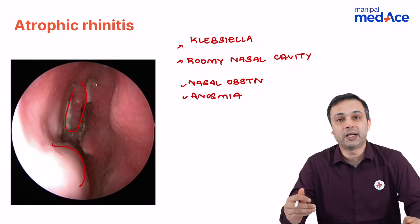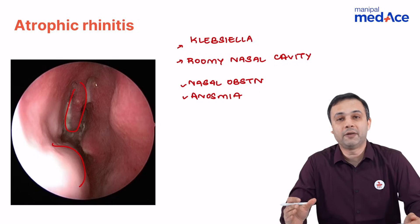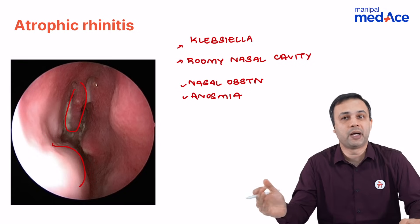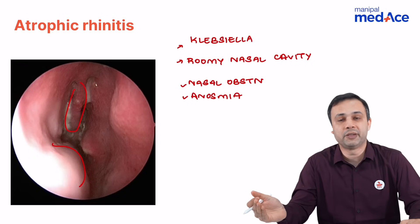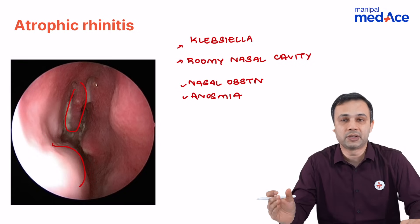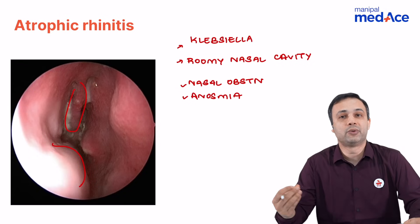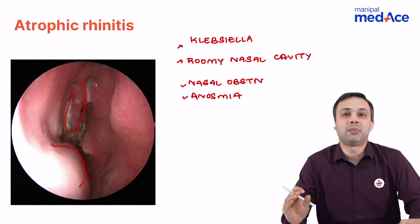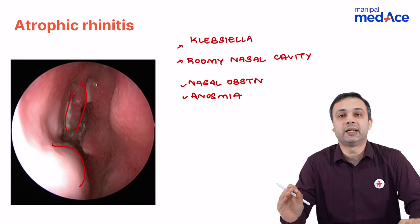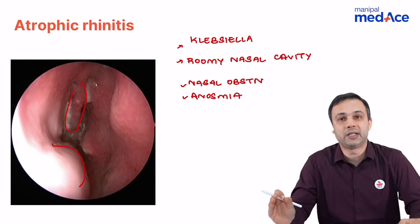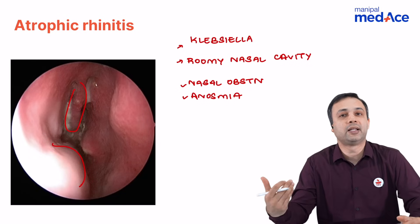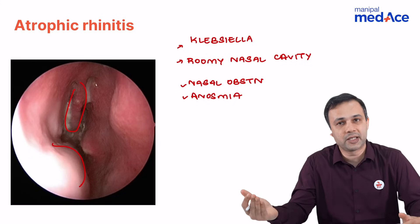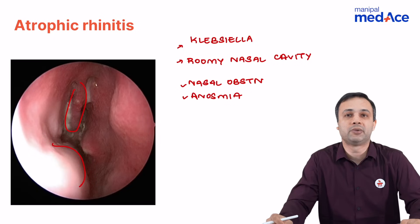How do you treat atrophic rhinitis? You have a sodium bicarbonate borate solution which can be used. You have glucose in glycerin drops. There are multiple medical lines of management; other than that, there is chloramphenicol ozaenae solution which can also be used.